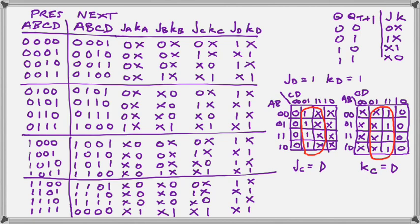We've filled in the input functions for you using the flip-flop excitation table, and we have reduced the first four. The JD and KD clearly have no zeros, so they're equivalent to 1.